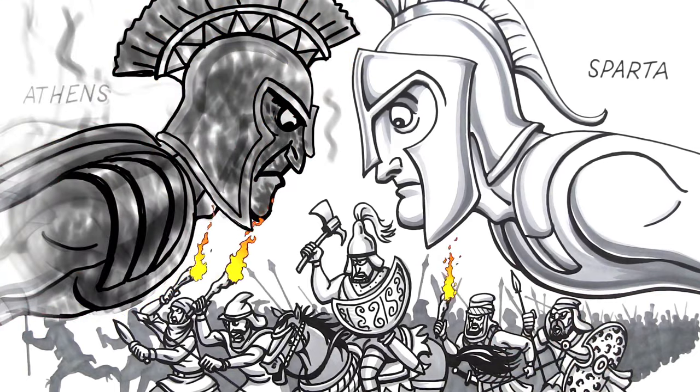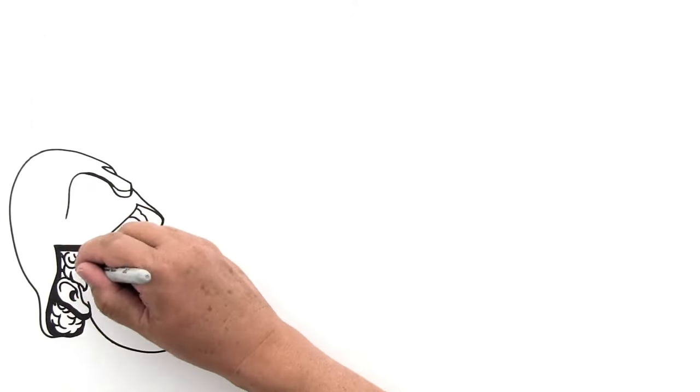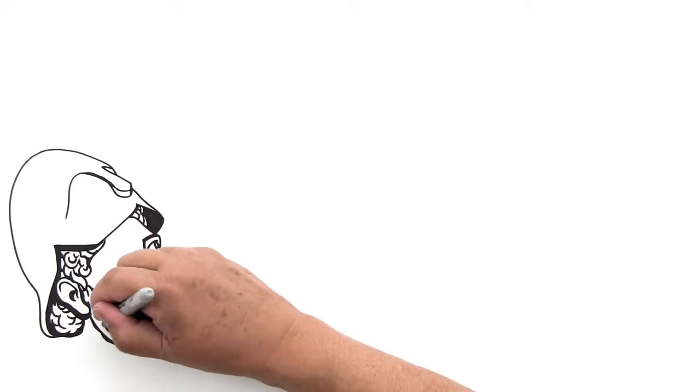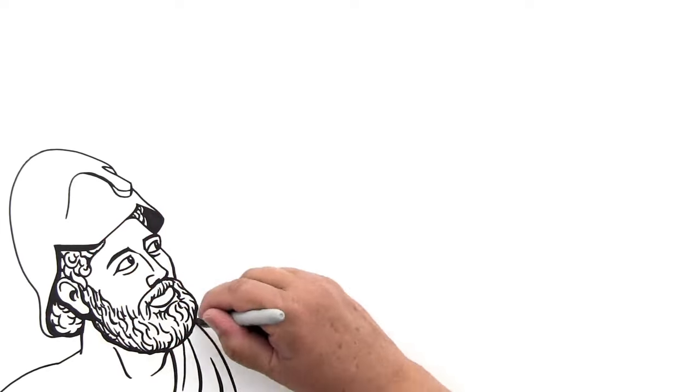It was time for the Athenians to rebuild! Surging with confidence after their triumph over the Persian Empire, the Greeks launched into a golden age called the Classical Period.